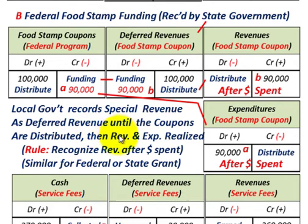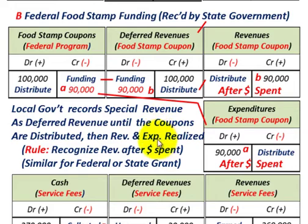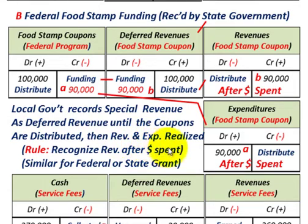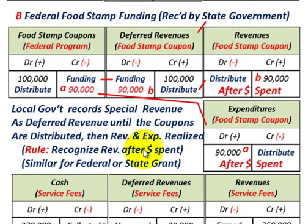After the food stamp coupons are distributed, the local government recognizes revenue and expenditure. The rule is: recognize revenue after the dollars are spent — meaning after the local government distributes those food stamps to recipients. This rule — recognize revenue after the dollars are spent or distributed — applies similarly to any other federal or state grant.